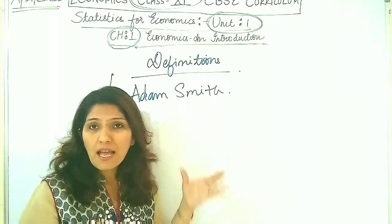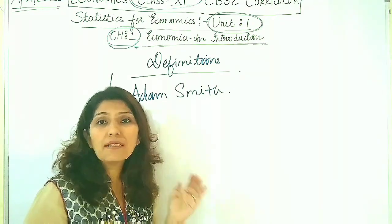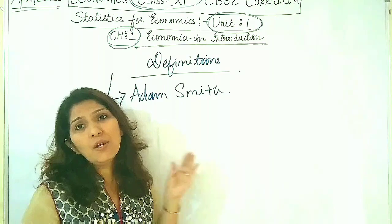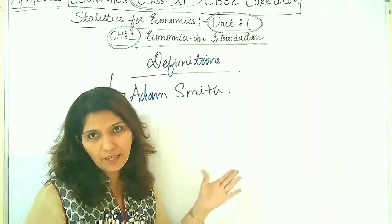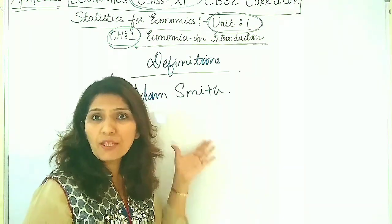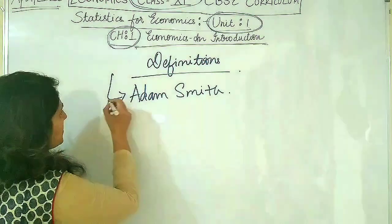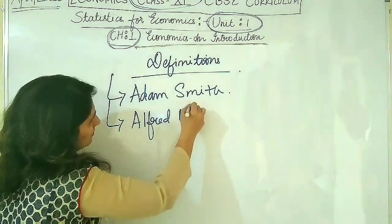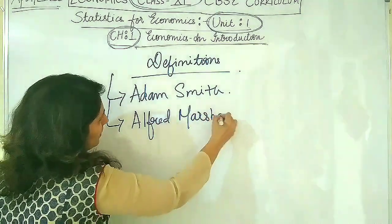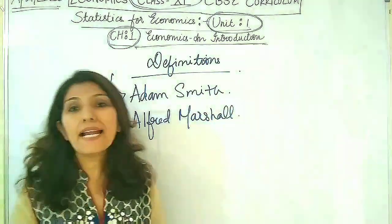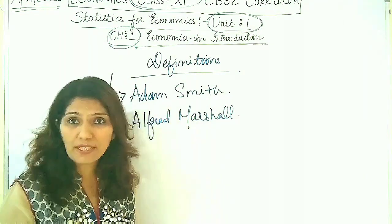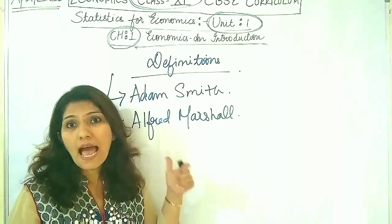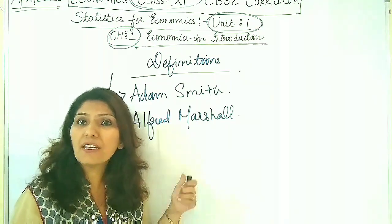Adam Smith is known as the father of economics because he was the first person who gave us a definition of economics. After Adam Smith came Alfred Marshall. Adam Smith was a European economist who lived in Scotland, whereas Alfred Marshall was also a European economist who lived in London.